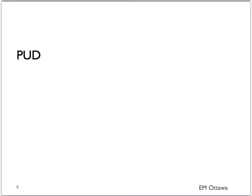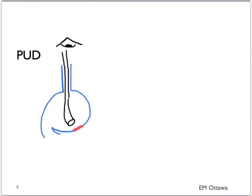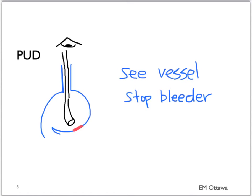In peptic ulcer disease, patients can bleed quickly. The main treatment for a bleeding ulcer is treatment during endoscopy, which allows you to identify the bleeding vessel. Multiple types of treatment can be used during endoscopy to achieve hemostasis. In terms of medical treatment, a proton pump inhibitor may be given. If the patient has a surgical abdomen because the ulcer has perforated, then surgery should be consulted.